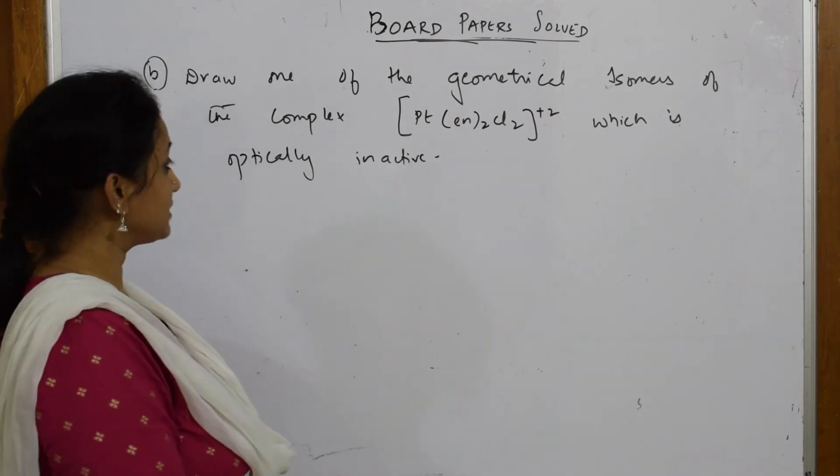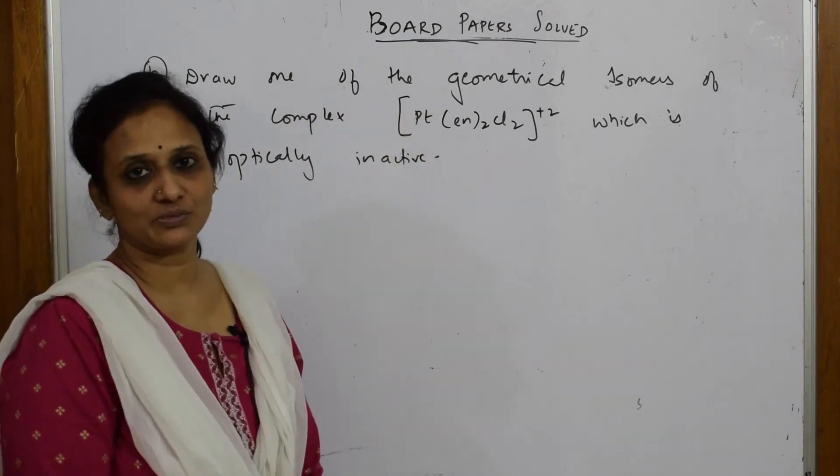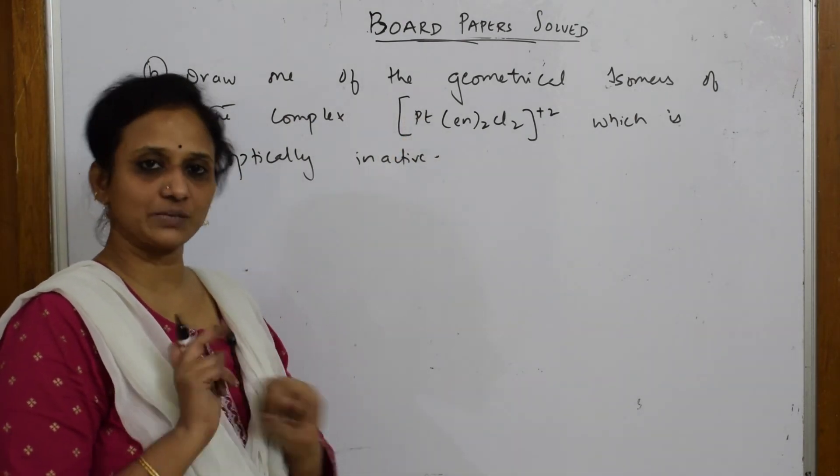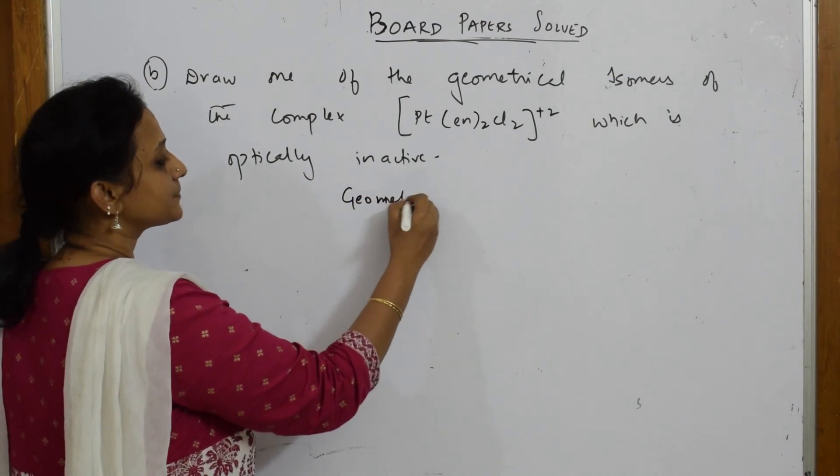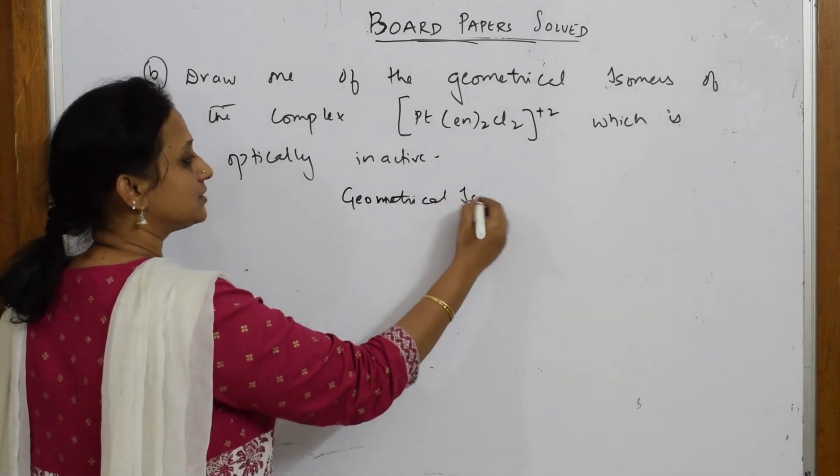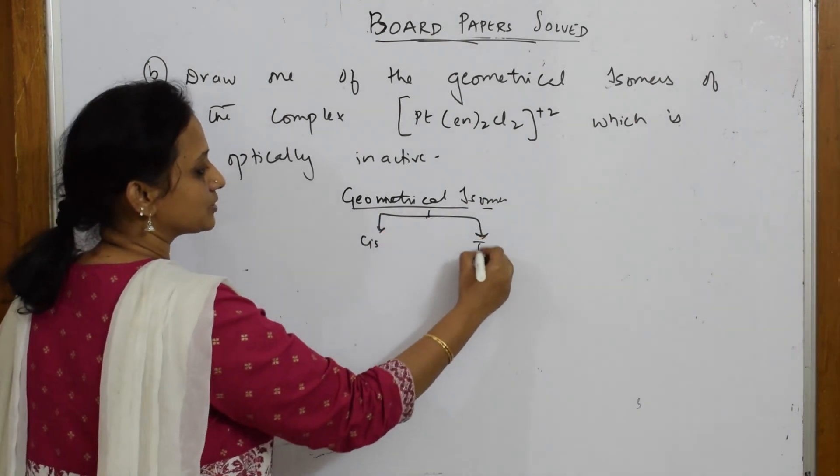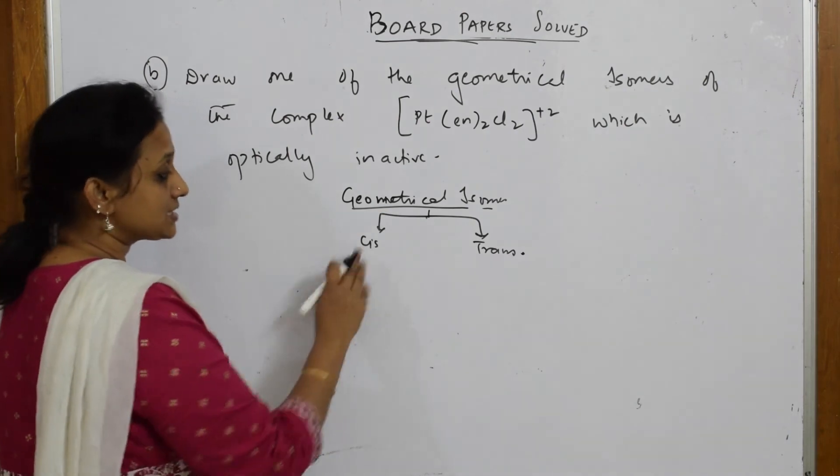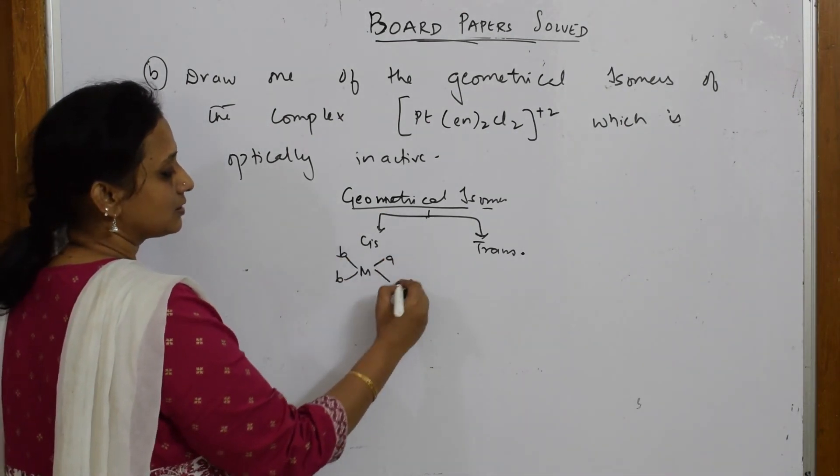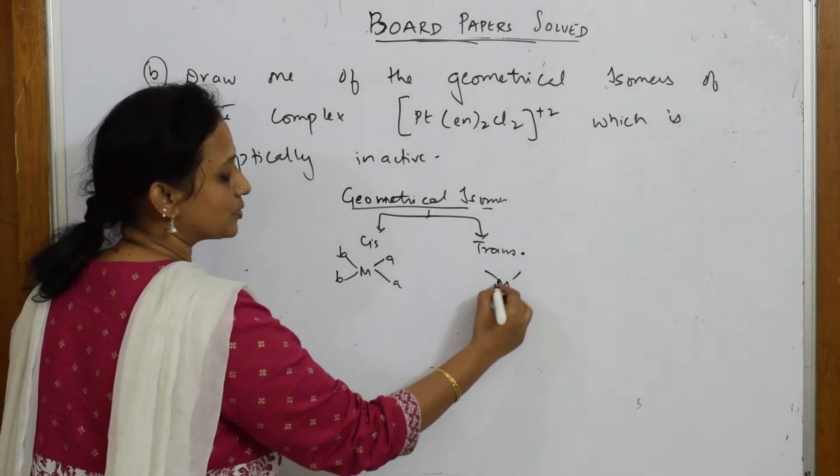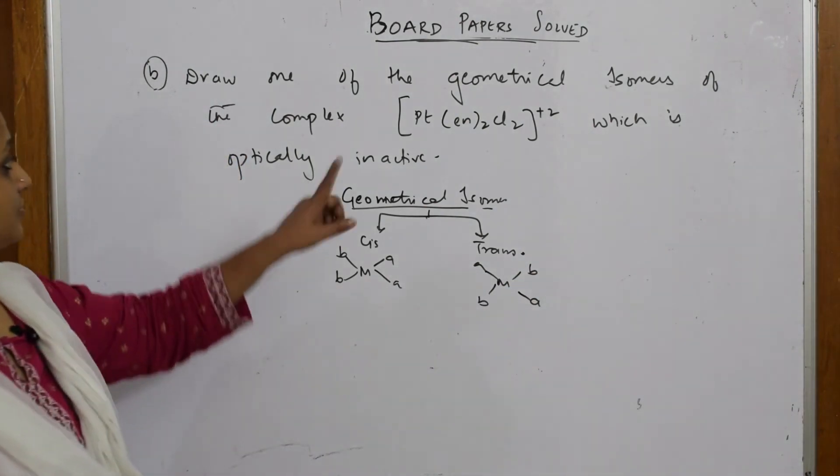Very interesting question. They asked me to draw one of the geometrical isomers. Basically we have two types of geometrical isomers: cis isomer and trans isomer. Cis means on the same side, trans means on the opposite side.